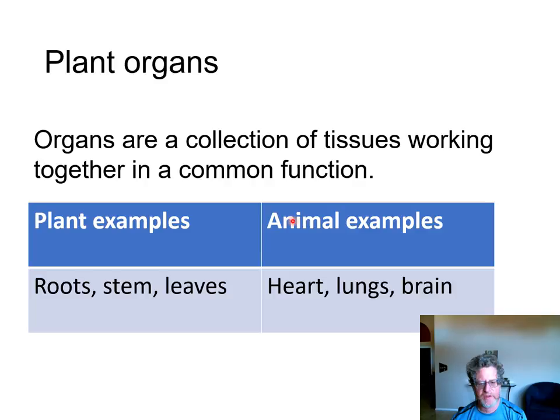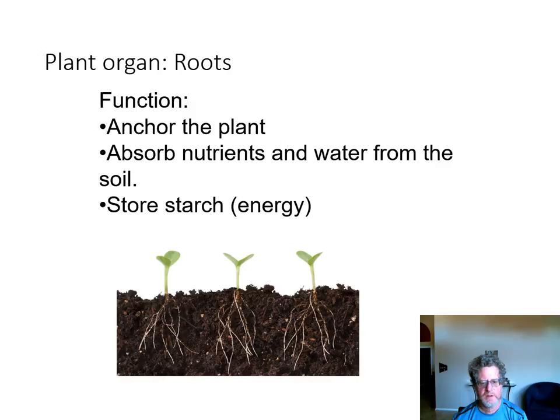We'll talk about plant organs — we're familiar with animal organs like our heart, lungs, and brain, and in plants there are things like flowers, fruits, roots, stems, and leaves. Roots anchor the plant in the ground, they absorb water and nutrients from the soil, and roots are also often storing starch as energy for the plant.